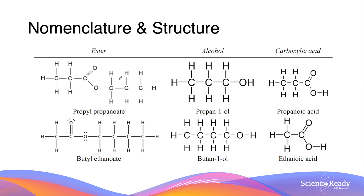This tells us that propyl propanoate is produced from propan-1-ol, the alcohol, and propanoic acid, the carboxylic acid, both of which contain three carbon atoms in the molecule. Using the same approach, butyl ethanoate is formed from butan-1-ol and ethanoic acid.